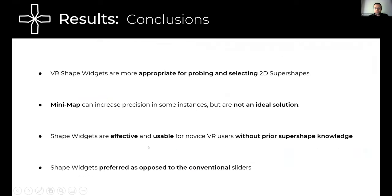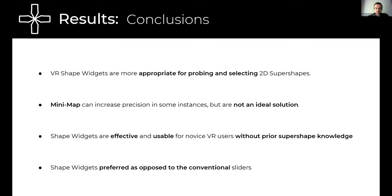To summarize, we found that the VR shaped widgets were effective, more efficient, and natural than conventional VR 1D sliders, while also being usable for users without prior knowledge of super shapes. We also found that the proposed VR widgets provide a quick overview of the main super shapes within the 3D dimensional intervals of the exponent parameters, and users can easily reach the desired solution without having to perform fine-grained handle manipulations. That's about it for seven minutes. Thanks.